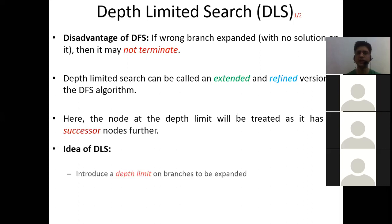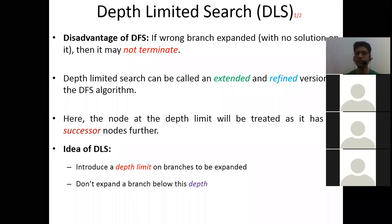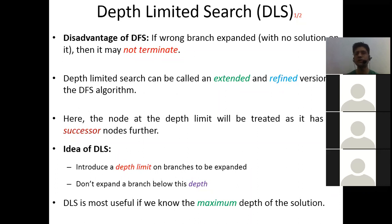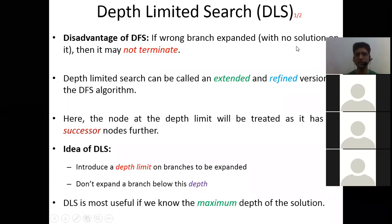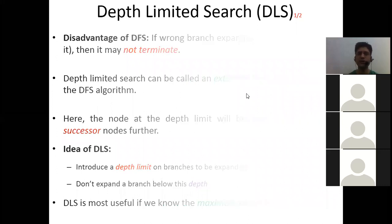The idea of depth limited search is: it introduces a depth limit on branches to be expanded, and it does not expand branches below that depth. It is most useful when we are aware of the maximum depth at which we can get the solution. The disadvantage of DFS is: if we choose a wrong branch having no solution in it, it may not terminate. Depth limited search is an extended and refined version of DFS where at the depth limit node, we treat it as having no successor nodes at all.